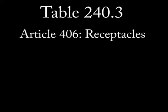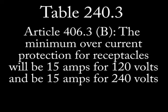Let's finish this presentation with receptacles, which falls under article 406. The only thing I could find on overcurrent protection of receptacles was article 406.3 paragraph B, which merely states that the minimum overcurrent rating will be 15 amps at 120 volts or 15 amps at 240 volts.